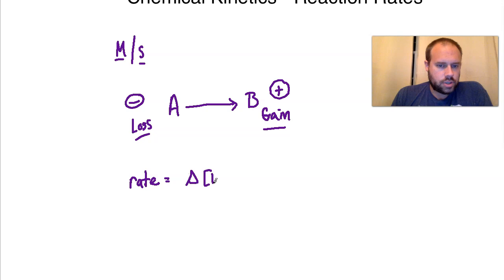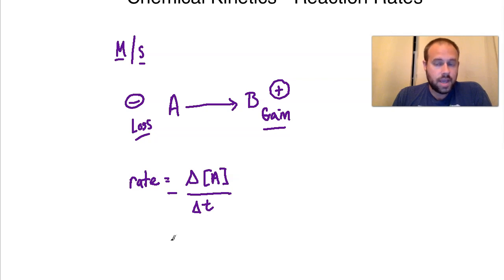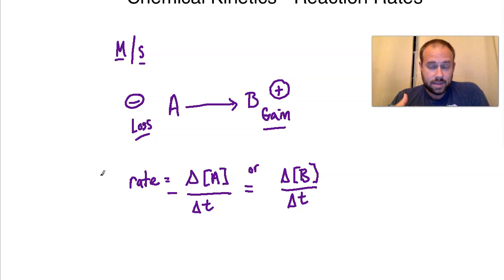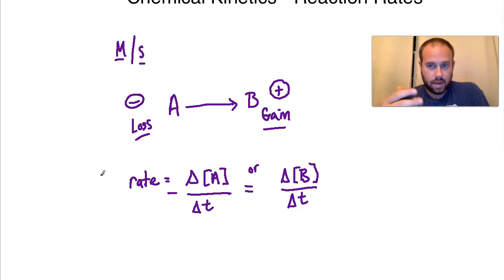We can express the rate as the change in concentration of A over some change in time. A negative sign is needed because A will disappear over time in order to become B. We can also express the rate as the formation of the concentration of B over some period of time T. So we can express the rate relative to A and its loss, or relative to B and the gain of the products.